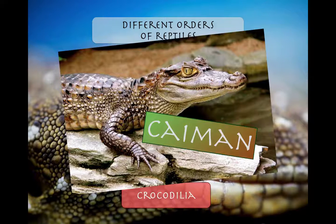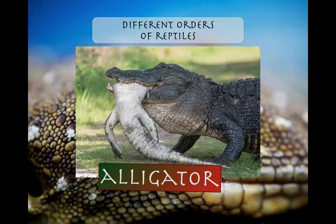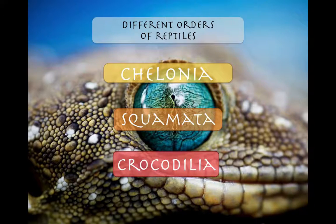And then finally, your Crocodilia. Crocodilia comprises your caiman, alligators, your crocodiles, and alligators — the ones you'll find in swampy areas like Florida. So again, these are the three orders of reptiles I want you to know: Chelonia, Squamata, and Crocodilia.